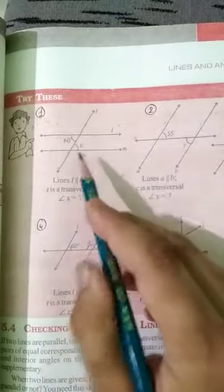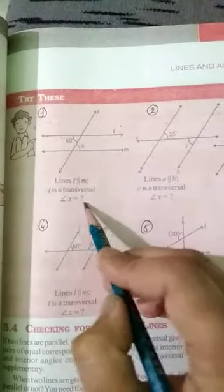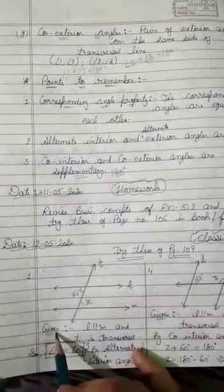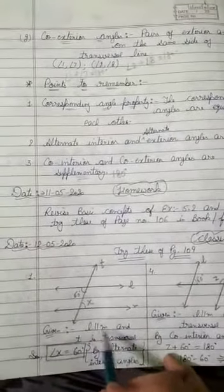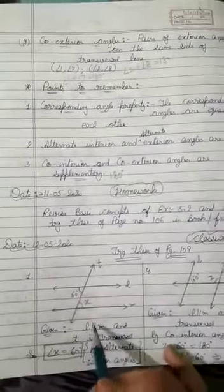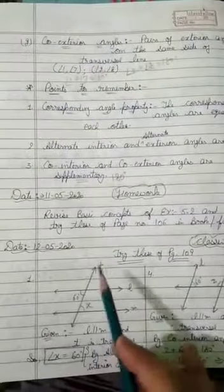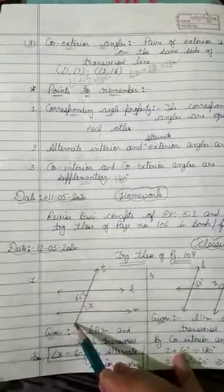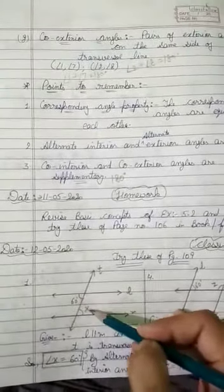Now angle X you have to find. Question mark is here, that means you have to find measure of angle X. So how can we find? We are going to try these of page number 109, this is the first part. You have to draw this figure in your notebook also. And you will write that given, it was given that L is parallel to M and T is transversal. Now we have to find X. When a transversal line intersects two or more lines, then some angles made by this transversal.